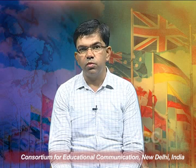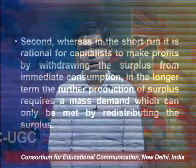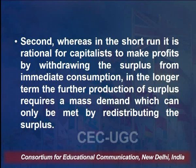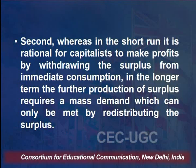Wallerstein highlights several specific contradictions. First, there is a continuing imbalance between supply and demand: as long as decisions about what and how much to produce are made at the level of the firm, this imbalance will be an unintended consequence of continuous mechanization and commodification. Second, whereas in the short run it is rational for capitalists to withdraw surplus from immediate consumption, in the longer term the further production of surplus requires mass demand, which can only be met by redistributing the surplus — making redistribution important and the present exploitative system unsustainable without adjustment.